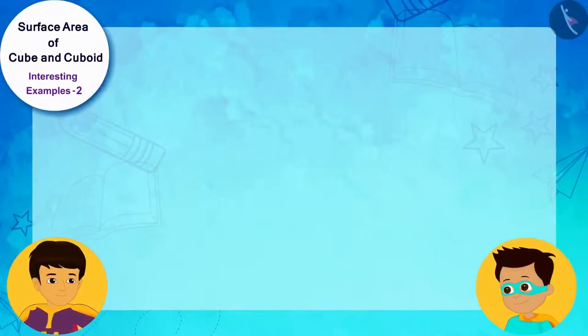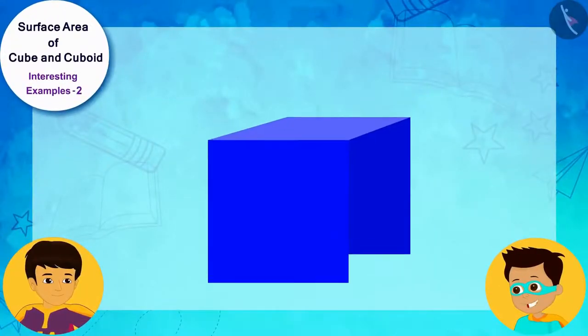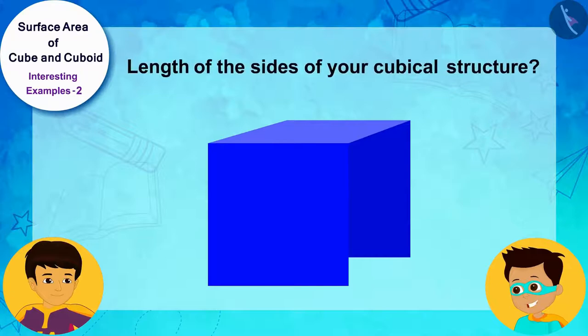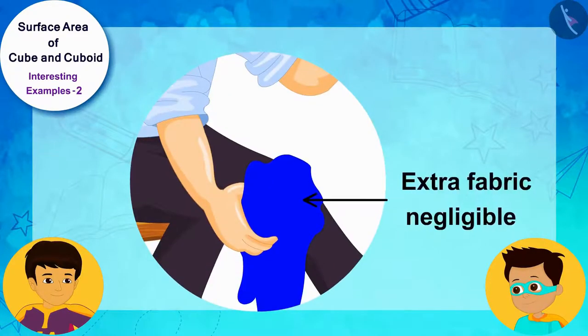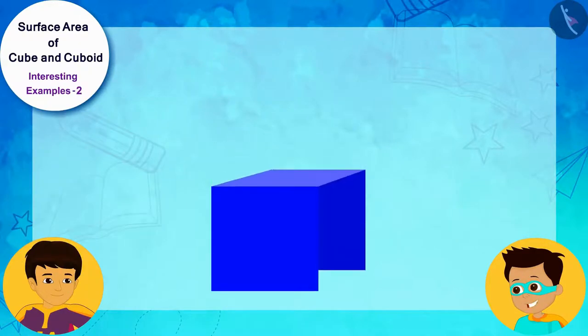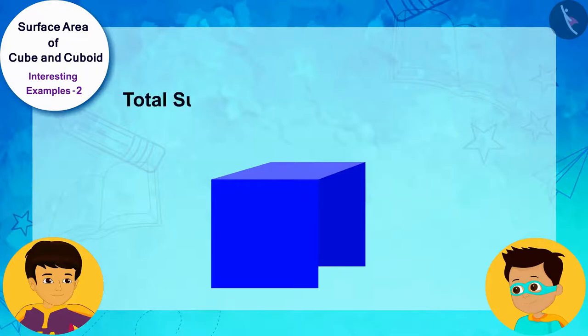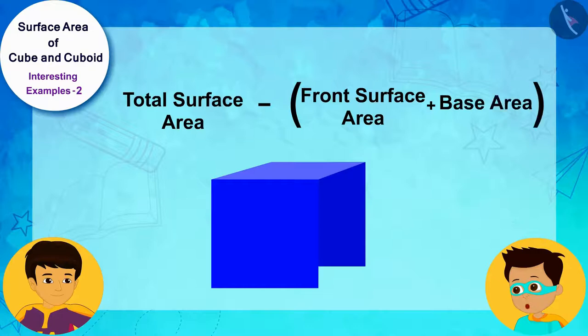Okay, tell me what will be the length of the sides of your cubic structure. About 32 inches. Assuming that the extra fabric of the tarpaulin used at the time of sewing will be negligible, the tarpaulin used in your cubic structure will need to have area of front face and base area subtracted from the total surface area of the cubic structure.